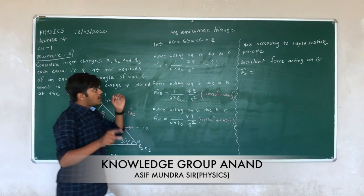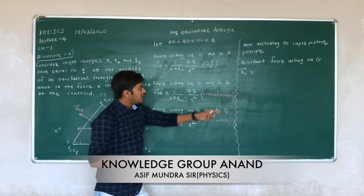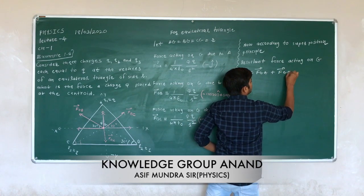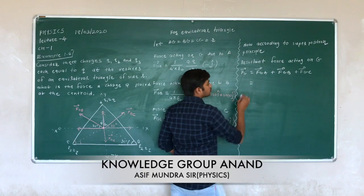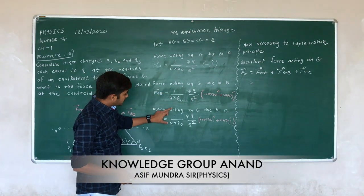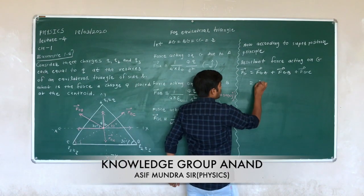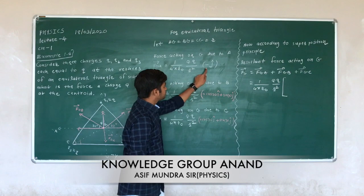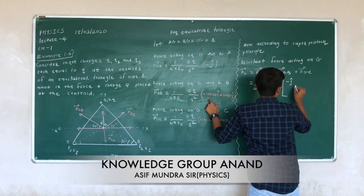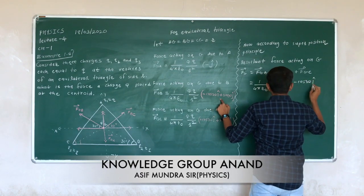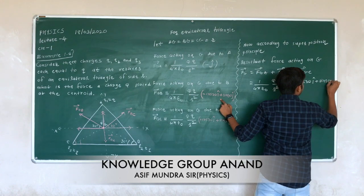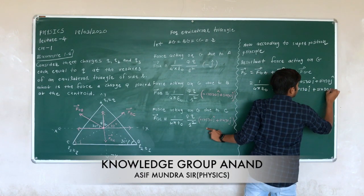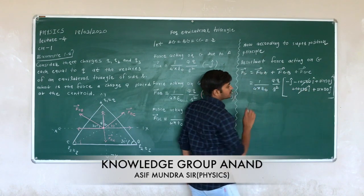Now we have three individual forces. For the superposition principle, the resultant force acting on G equals F_GA plus F_GB plus F_GC. Substituting: (1/4πε₀)(Q²/R²) multiplied by [(−ĵ) + (−cos30° î + sin30° ĵ) + (cos30° î + sin30° ĵ)]. The −cos30° î and +cos30° î cancel out.